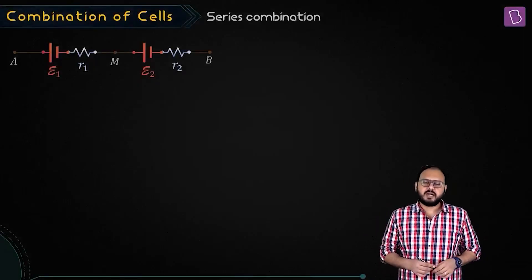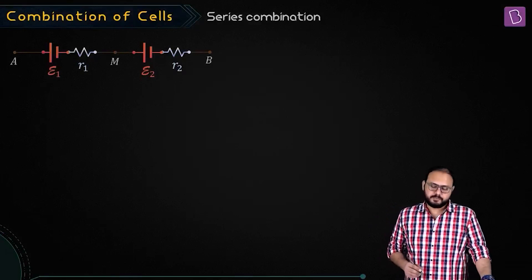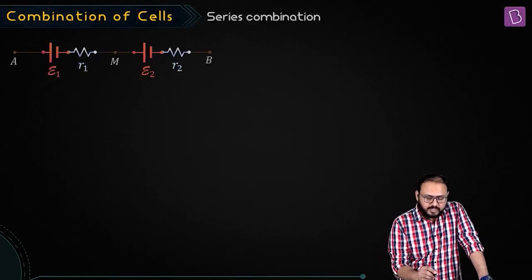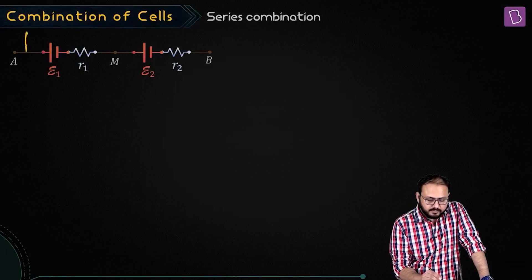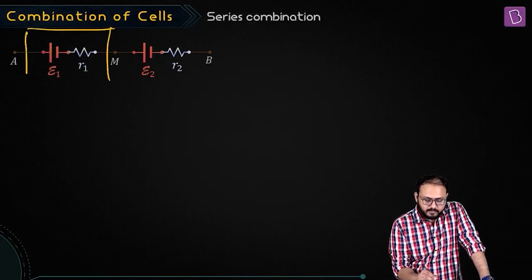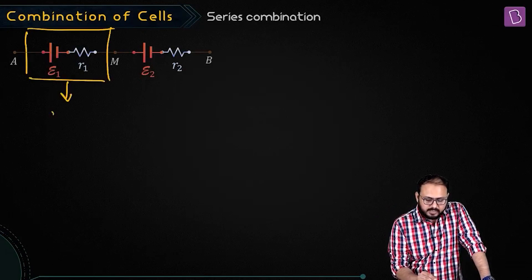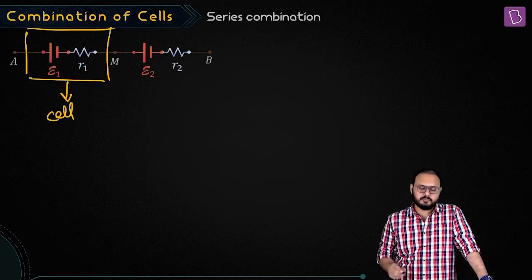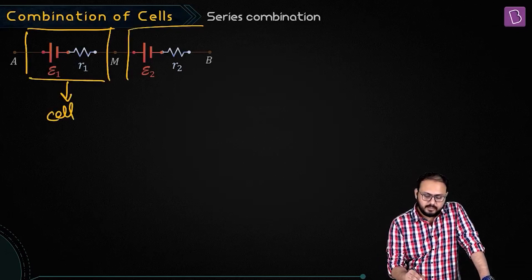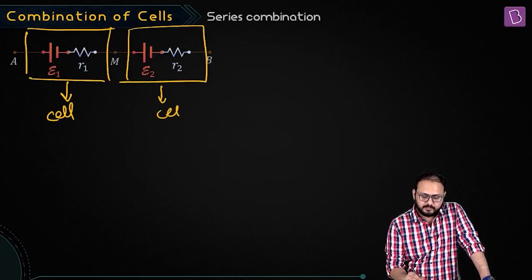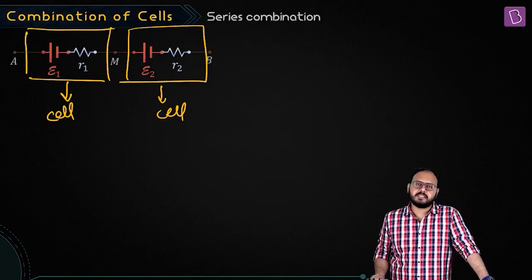Let's discuss the combination of cells, starting with series combination. Just to clarify one thing: this is one cell, this is another cell. Out here you have two cells in series.